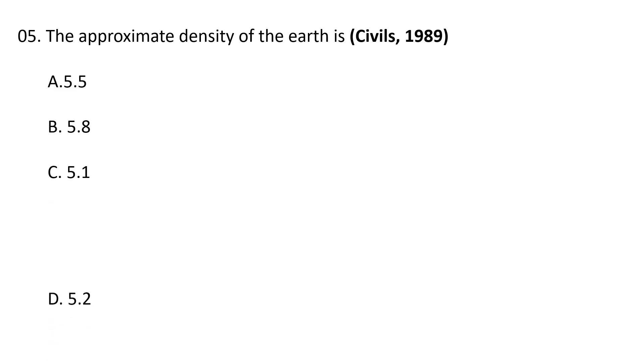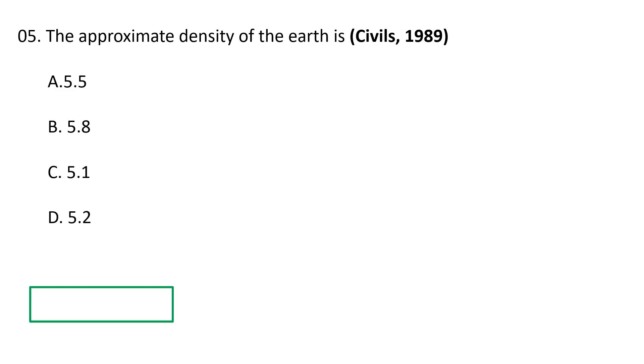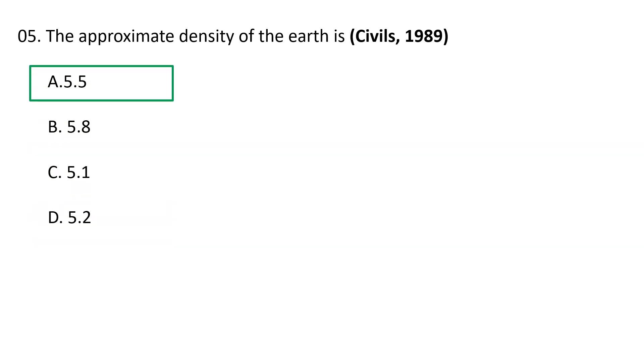Next question: The approximate density of the Earth — A) 5.5, B) 5.8, C) 5.1, and D) 5.2. The approximate average density of the Earth is 5.5, so A is the correct answer.